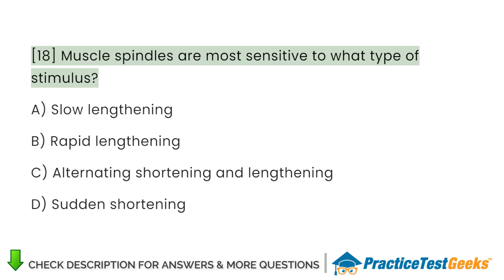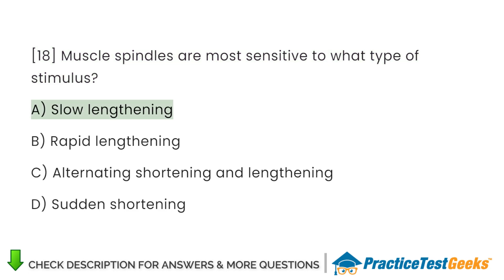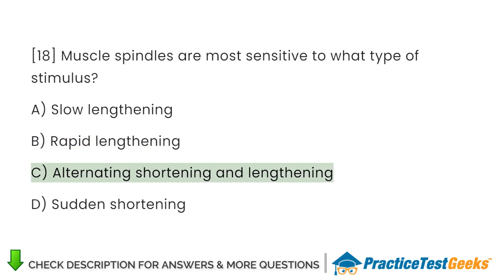Muscle spindles are most sensitive to what type of stimulus? A. Slow lengthening. B. Rapid lengthening. C. Alternating shortening and lengthening. D. Sudden shortening.